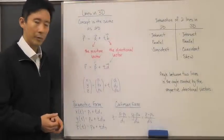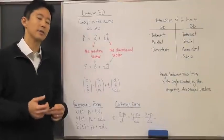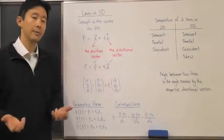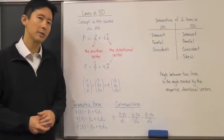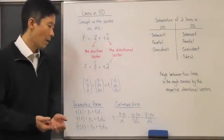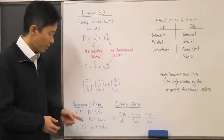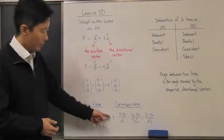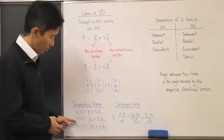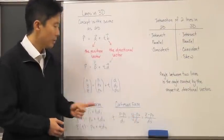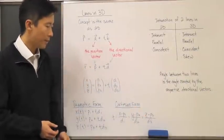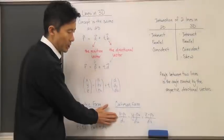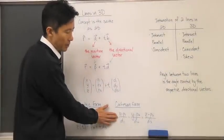To find the Cartesian form of the three-dimensional line, we eliminate the parameter t — just as in the two-dimensional case, except now we have three equations instead of two. Solving each parametric equation for t gives: t = (x − p₁)/d₁ = (y − p₂)/d₂ = (z − p₃)/d₃. Equating all three expressions, since they all equal t, gives us the Cartesian form of a line in three-dimensional space.